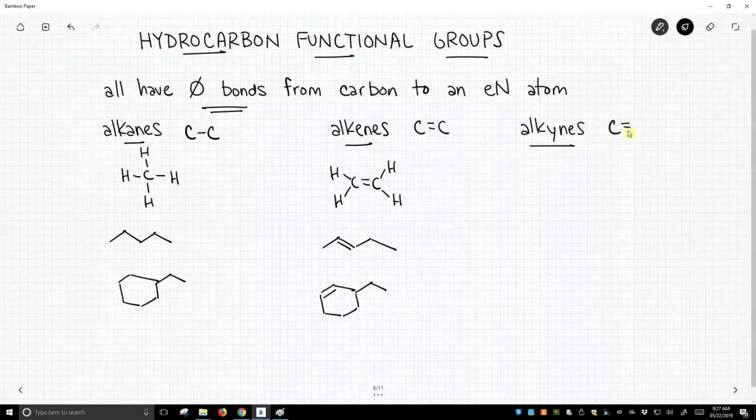Alkynes are characterized by carbon-carbon triple bonds. That's a sigma plus two pi bonds. The simplest alkyne would be this molecule. We can put them in longer chains.